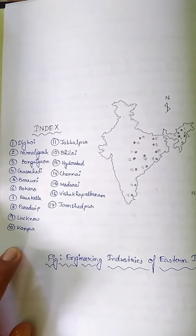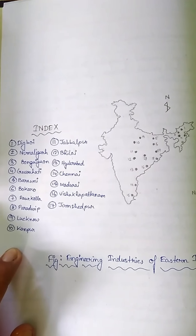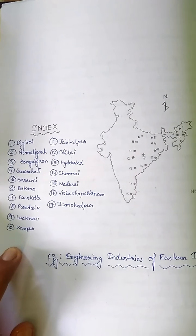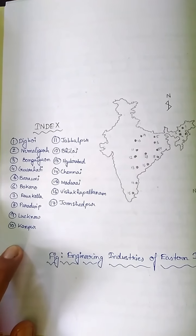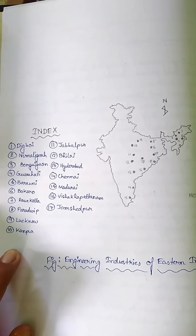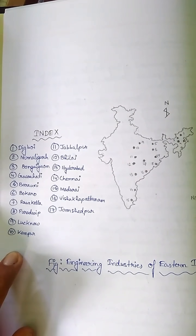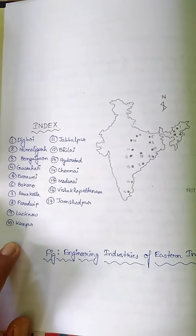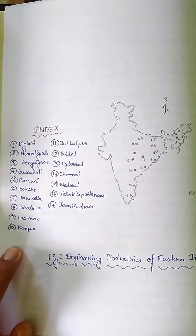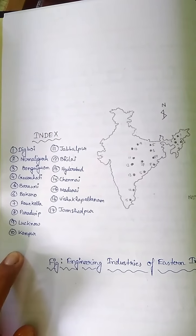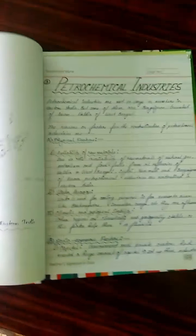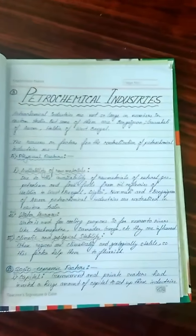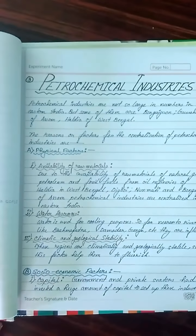The 17 engineering industry centers are: Digboi, Numaligarh, Bongaigaon, Guwahati, Barauni, Bokaro, Rourkela, Paradip, Haldia, Kanpur, Jabalpur, Bhilai, Hyderabad, Chennai, Madurai, Visakhapatnam, and Jamshedpur.